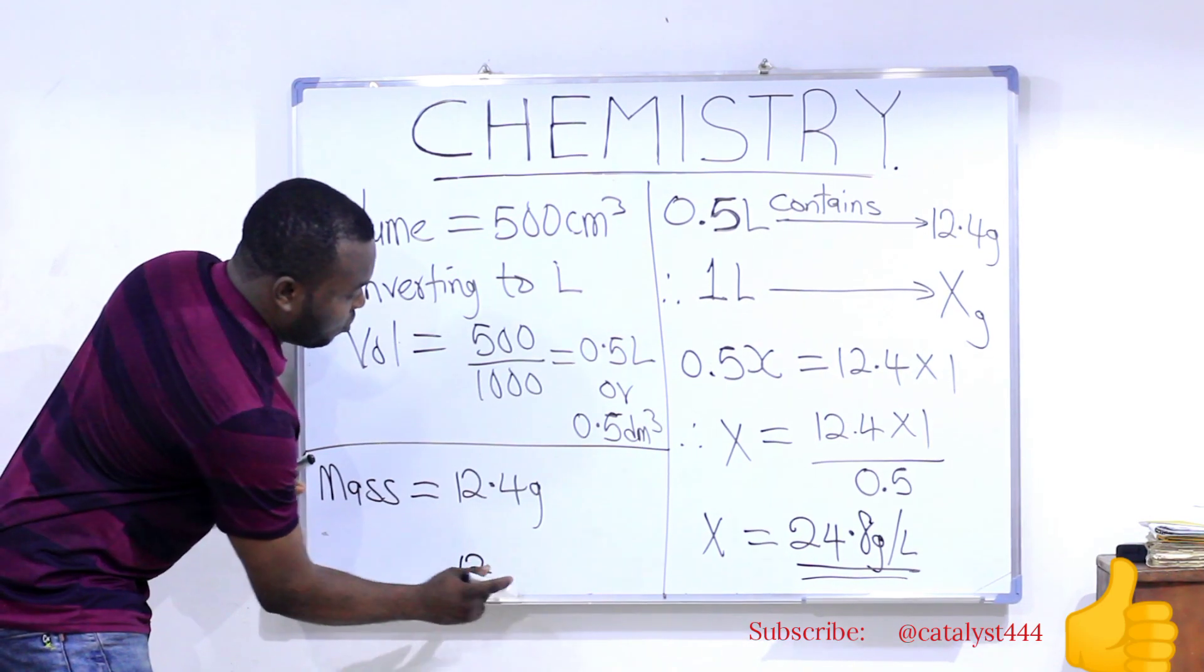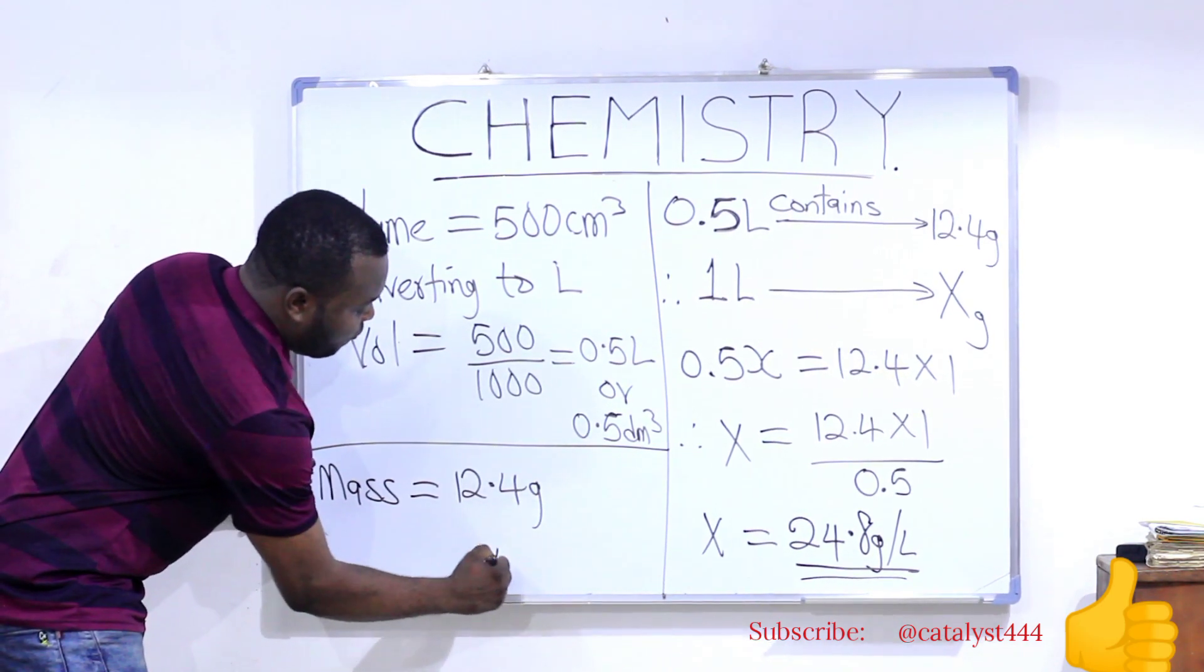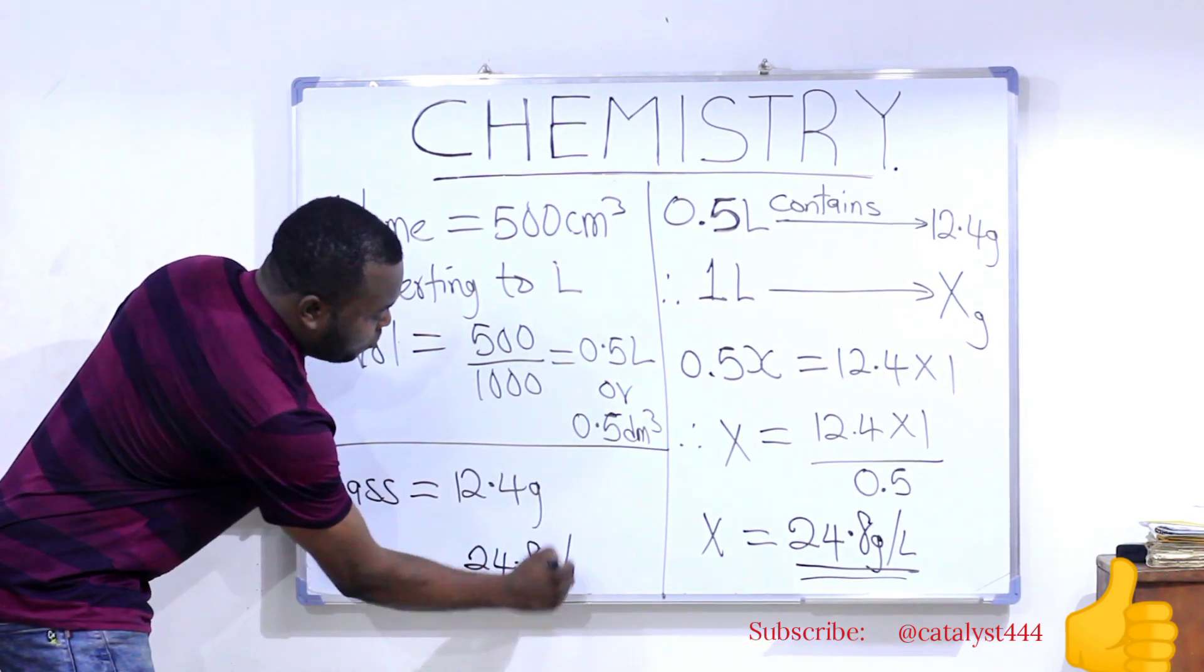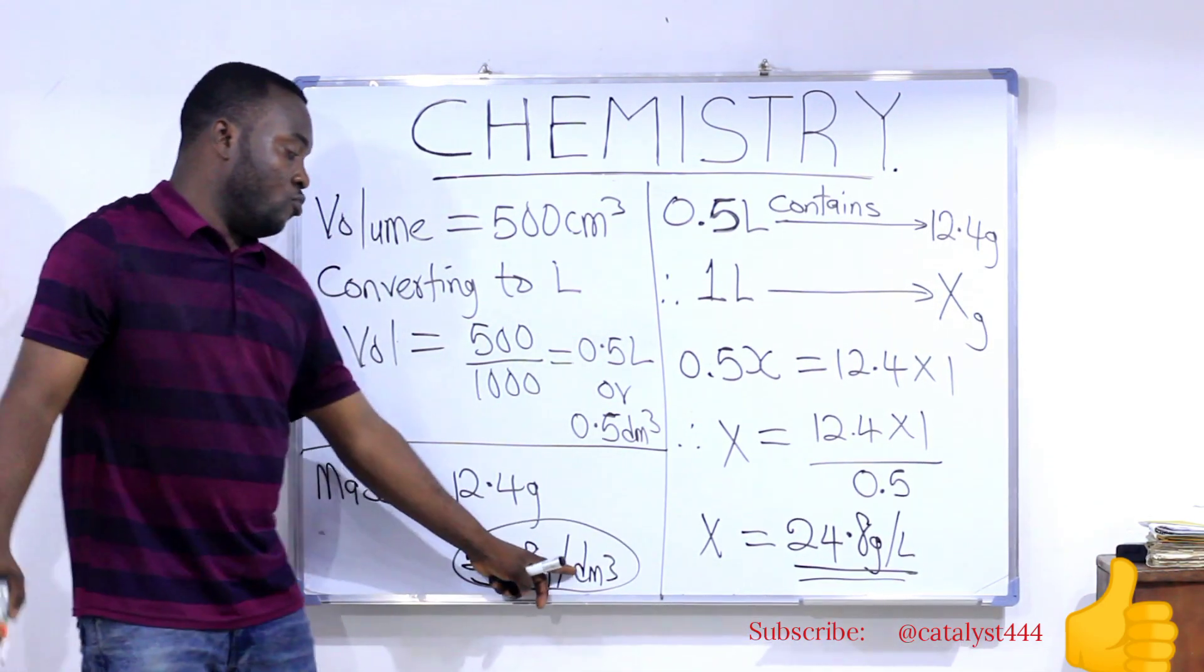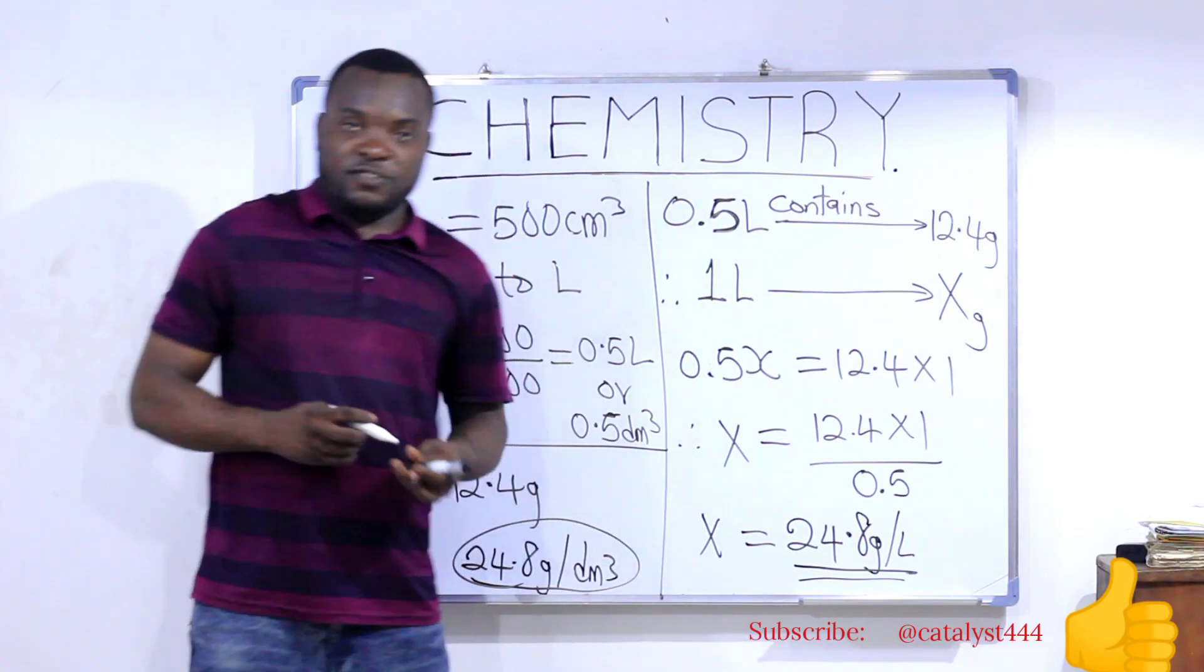You can call it 24.8 grams per dm³. Whether you report it as grams per dm³ or grams per liter is the same.